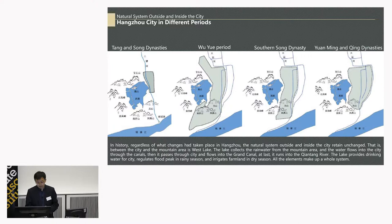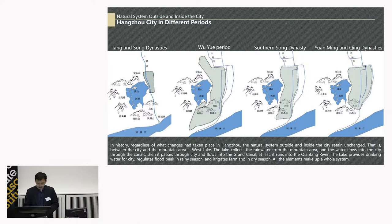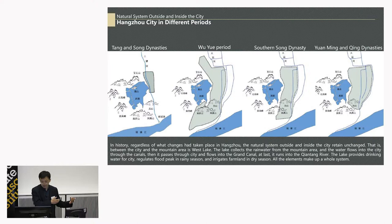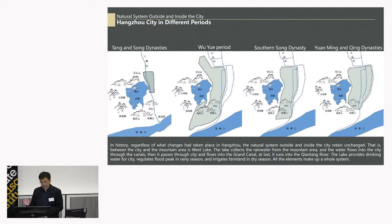Another city in this area is Hangzhou — a very famous and beautiful city in China, another paradise for Chinese people. Regardless of what changes had taken place in Hangzhou throughout history, the natural system outside and inside the city remained unchanged. Between the mountain area and the city there is a lake — the West Lake. The lake collects the rainwater of the mountains, and during the rainy season it collects the floodwater. The water flows through the canal into the city, and again through the canal to the big canal, and then to the big river.